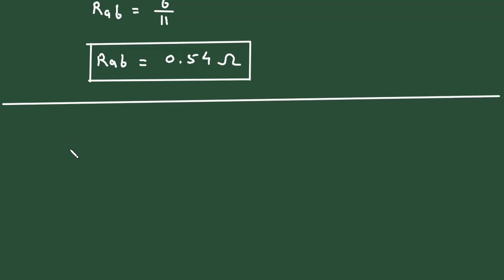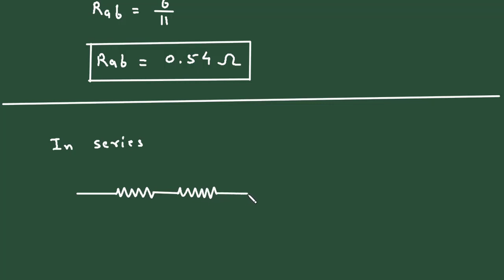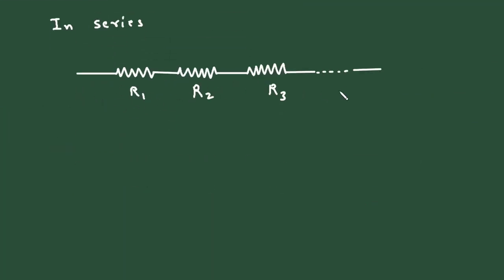Also, when resistances are connected in series, let us say this is R1, this is R2, this is R3, and so on. With terminal A and terminal B, the equivalent resistance RAB equals R1 plus R2 plus R3 and so on.